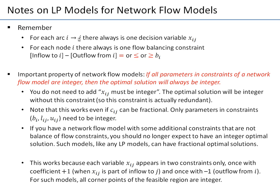There are important facts to use as checks when writing network flow models as LP models. First, for every arc there will always be exactly one decision variable xij — if you have 20 arcs you must have 20 decision variables. Second, the number of inflow-minus-outflow constraints must equal the number of nodes — if you have 10 nodes you need exactly 10 such constraints.